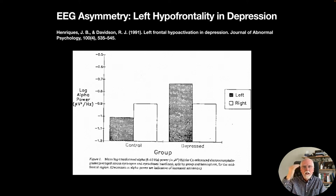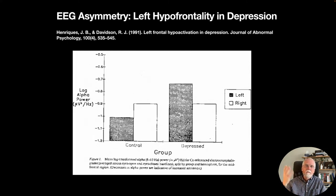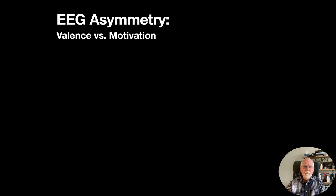When alpha oscillations are present, a brain region is at rest; when it activates, alpha disappears. Henriques and Davidson found that depressed individuals showed more left hemisphere alpha at the frontal sites — meaning less activation — what they termed hypo-frontality in depression. Control participants showed much less alpha in that region, indicating more activation during normal daily thinking.